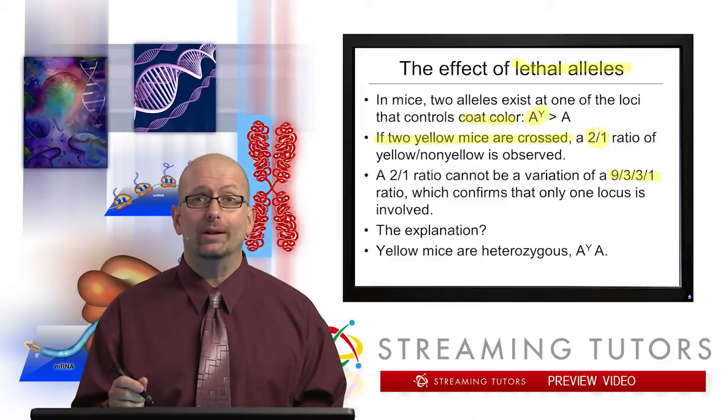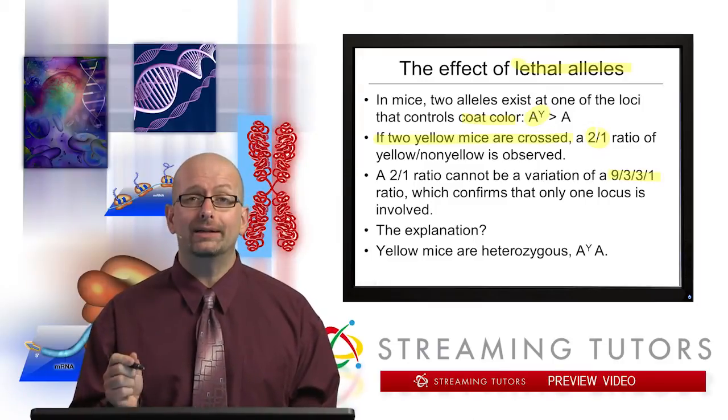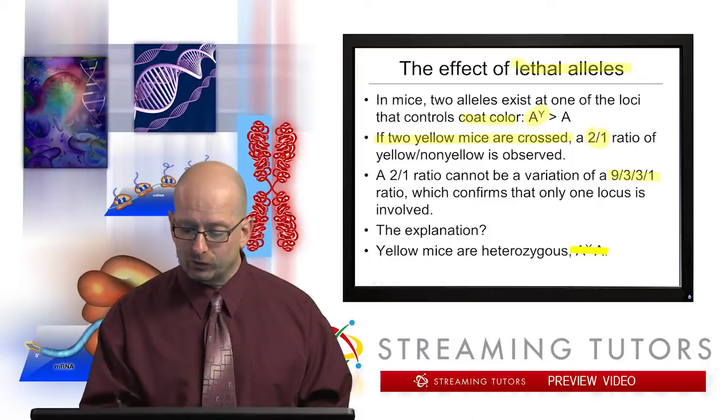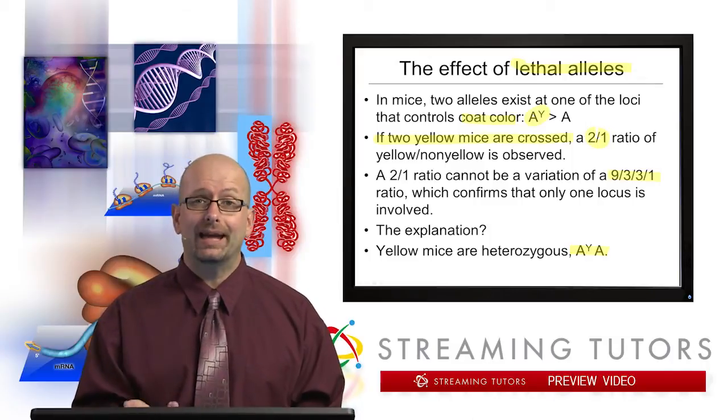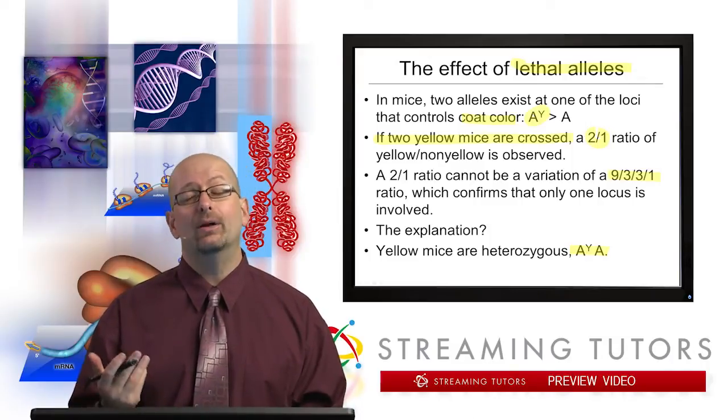So what is the explanation? Well, it turns out that all yellow mice are heterozygous, meaning they have one capital A capital Y and one